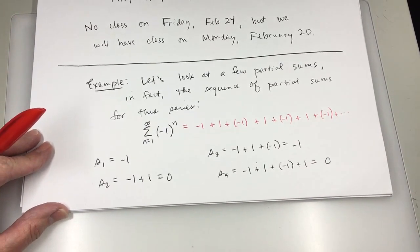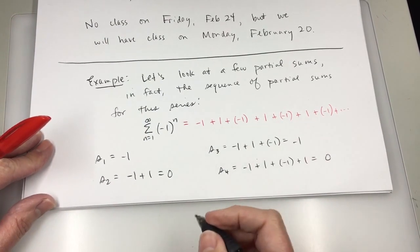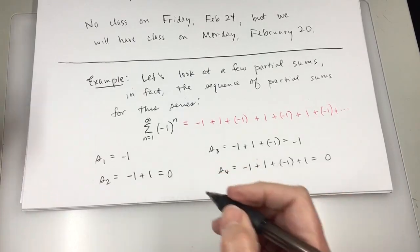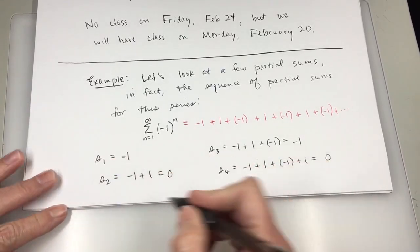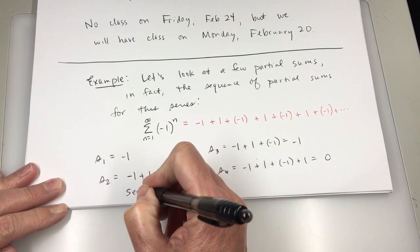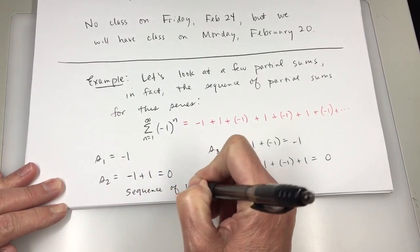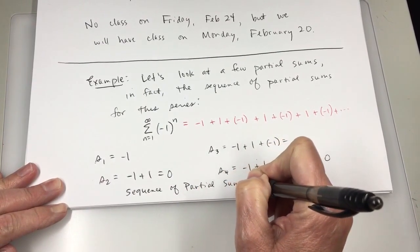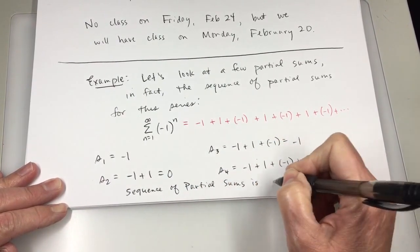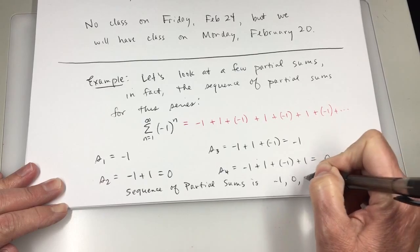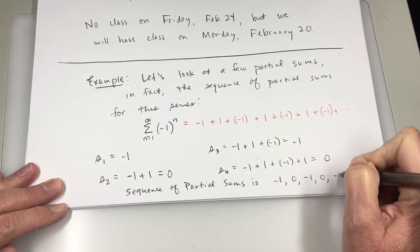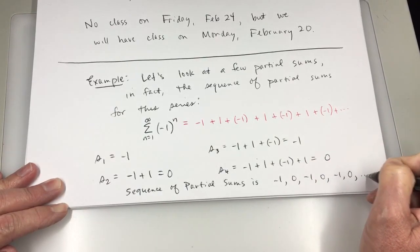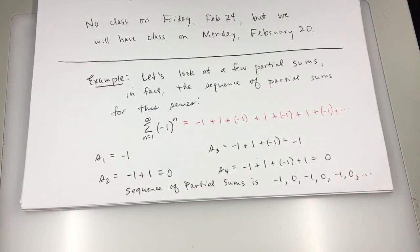And the sequence of partial sums for this problem would be, the first one's negative 1. I'll squeeze this in at the bottom of the page. Sequence of partial sums is negative 1, 0, negative 1, 0, negative 1, 0 dot dot dot, continues like that forever.